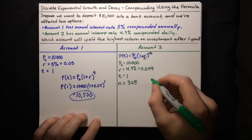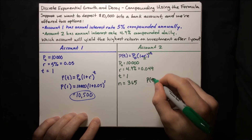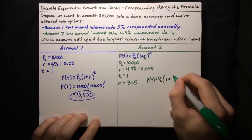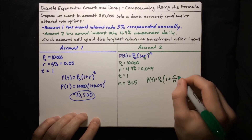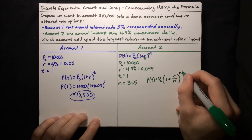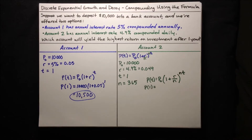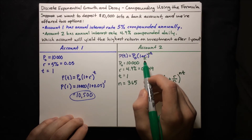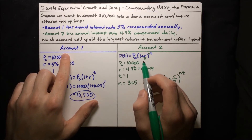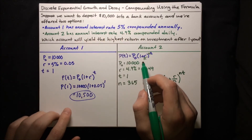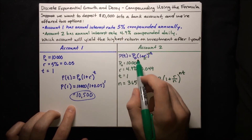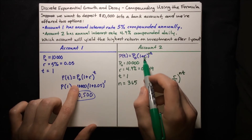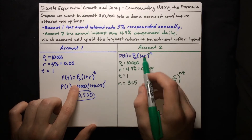Initially R was the interest rate on each annual compound, but now that we're doing daily compounds, we have to change this to be our interest rate on each compound. There are N compounds, so just divide it by N. And since there are N compounds every year, we need to multiply T by N so that each time we increase by one year, that's an additional N compounds. So the formula is: P of T equals P0 times (1 plus R/N) to the power of NT. One thing to notice: if we plug in 1 for N, like we had in account 1, this would just simplify to the original formula — R over 1 is just R, and 1 times T is just T, so that matches up nicely.